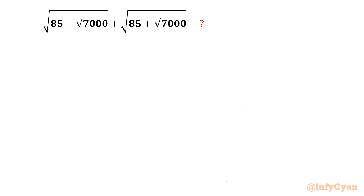Welcome to Infigar. In this very powerful video on algebraic challenging equations, we are going to simplify two Math Olympiad questions. Question number one is: square root of (85 minus square root 7000) plus square root of (85 plus square root 7000). This value we need to find out.